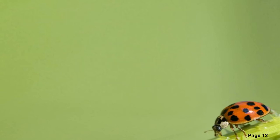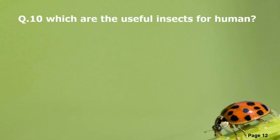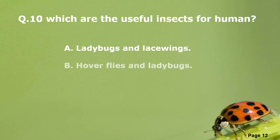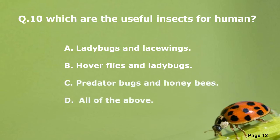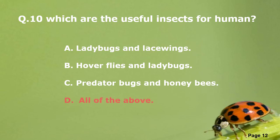Question Number 10. Which are the useful insects for humans? A: Lady Bugs and Lace Wings. B: Hover Flies and Lady Bugs. C: Predator Bugs and Honey Bees. D: All of the Above. Right answer is D: All of the Above.